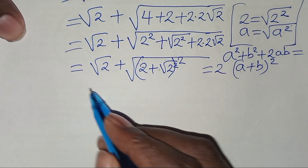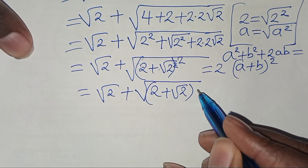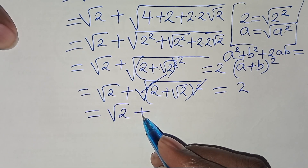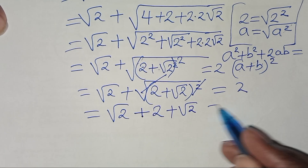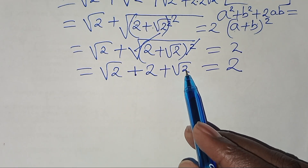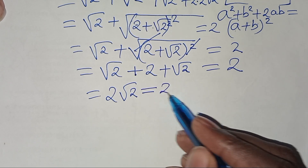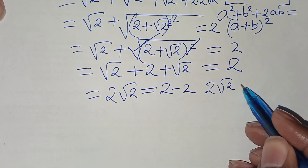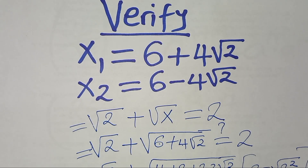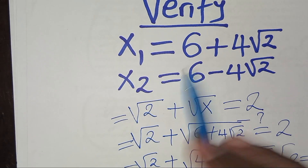This simplifies to √(4 + 2√2), which is not equal to 2. We get 2√2 on the left side, but moving 2 over we'd need 2√2 = 0, which is false. Therefore x₁ does not satisfy the equation and is an extraneous root.